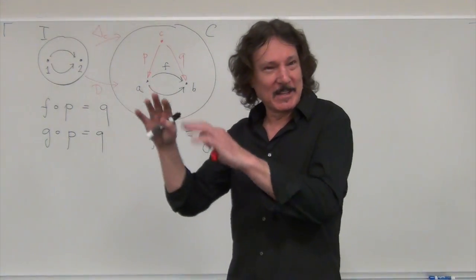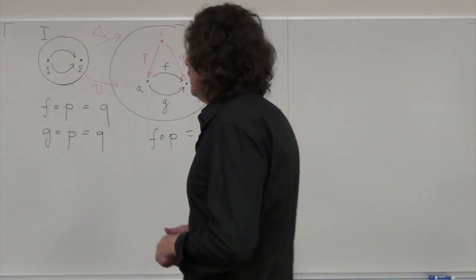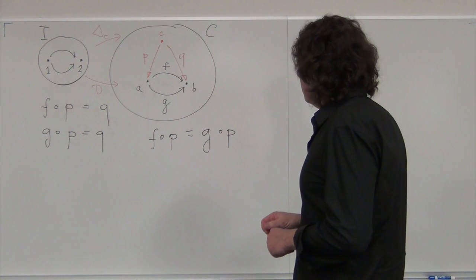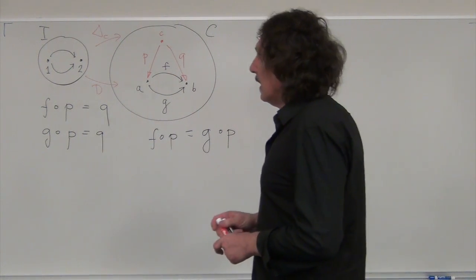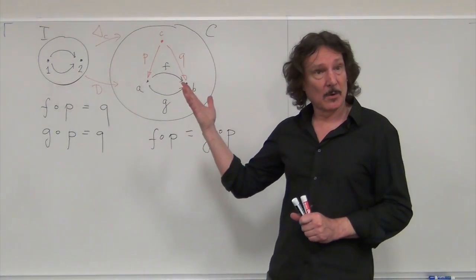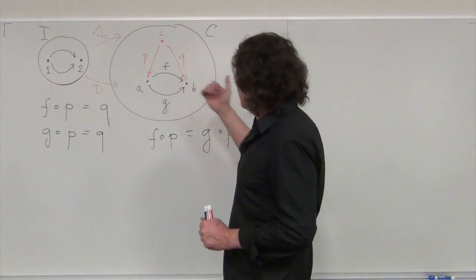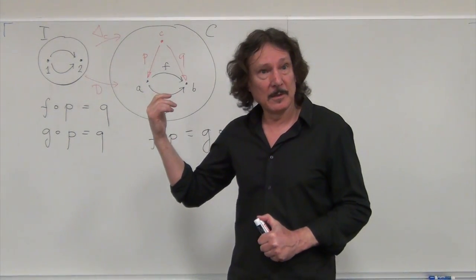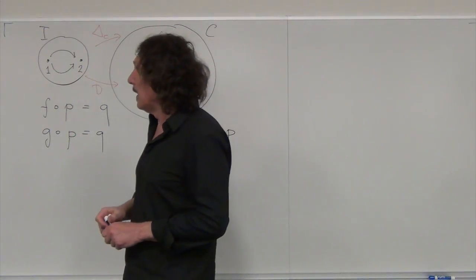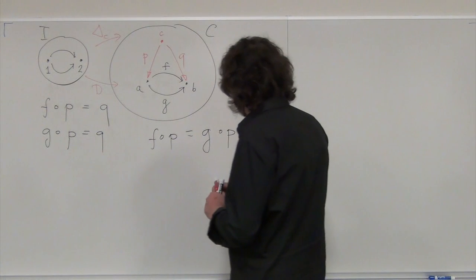This sort of reminds you of a monomorphism. Now the best of these cones will be the limiting cone, and the limit of this cone is called an equalizer.